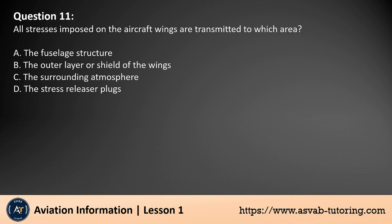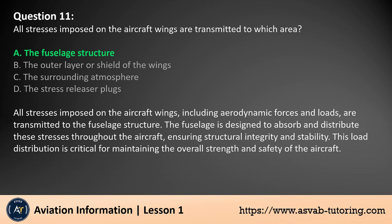Question 11. All stresses imposed on the aircraft wings are transmitted to which area? A. The fuselage structure. B. The outer layer or shield of the wings. C. The surrounding atmosphere. D. The stress releaser plugs. The answer is A. All stresses imposed on the aircraft wings, including aerodynamic forces and loads, are transmitted to the fuselage structure. The fuselage is designed to absorb and distribute these stresses throughout the aircraft, ensuring structural integrity and stability. This load distribution is critical for maintaining the overall strength and safety of the aircraft.